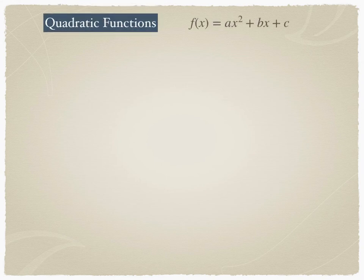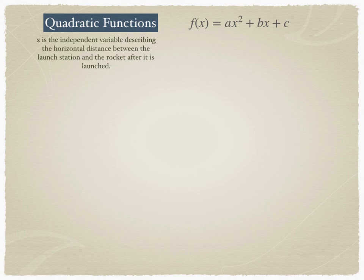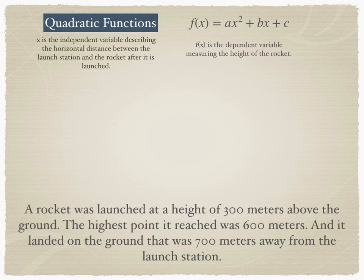Now that we have established the general formula of quadratic functions, x is the independent variable describing the horizontal distance between the rocket and the launch station, and f is the dependent variable measuring the height of the rocket. For a specific example: a rocket was launched at an initial height of 300 meters above the ground, reaches the highest point at 600 meters, and lands on the ground 700 meters away from the launch station.